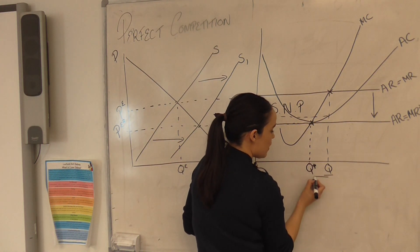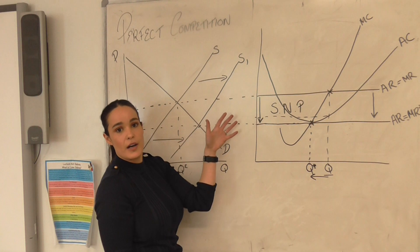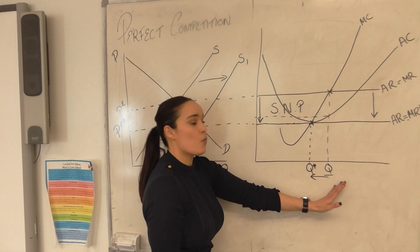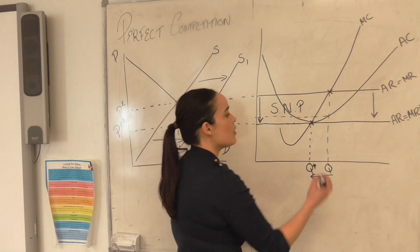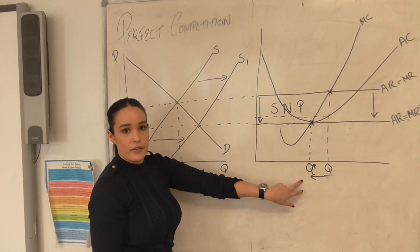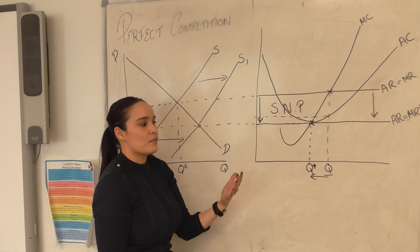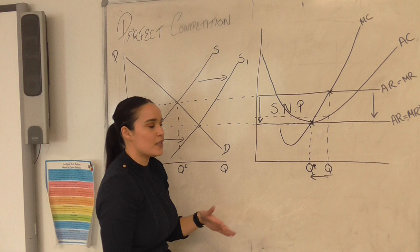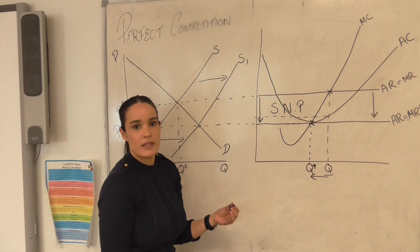So our quantity has fallen and that makes complete sense here because as more firms have entered the market consumers have more choice, and therefore the quantity going to one firm will be reduced as it's spread across all the new firms that are also in the market. And therefore a firm is making normal profit now. Please just remind yourselves and be aware that that normal profit does include remuneration for the business owner and it does also include any potential investment or return on investment that they would have got if they had it in a bank. Because this is the amount of profit that a business needs to stay in the market.